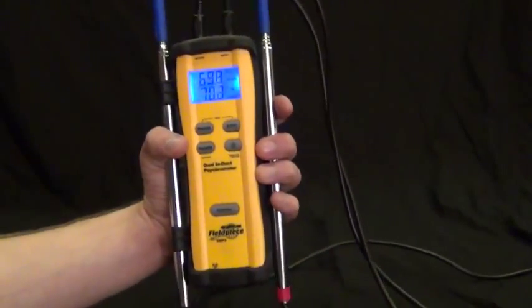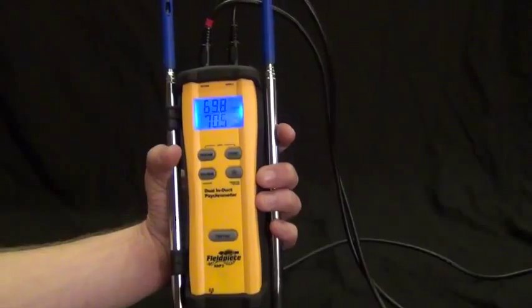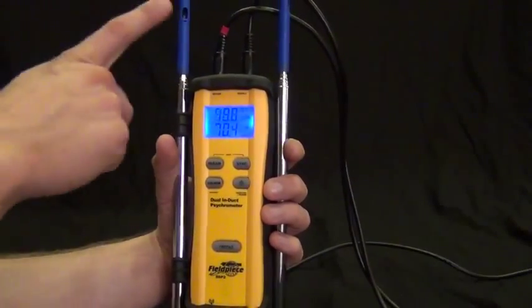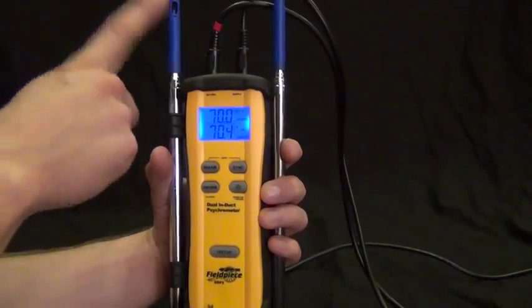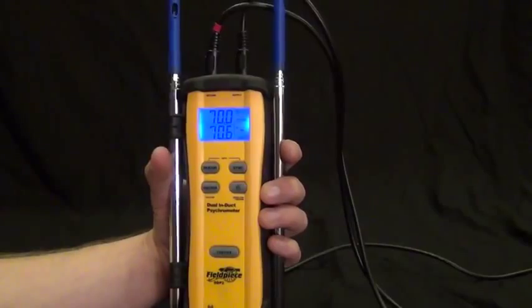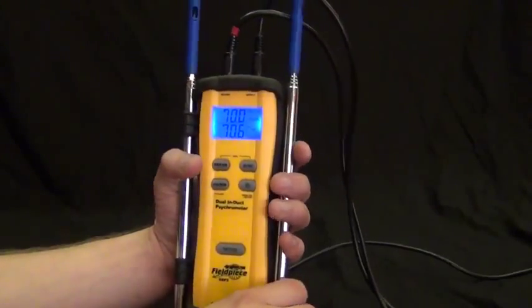And basically this is your Delta T tool on steroids. So what it measures is it measures a dry bulb and a relative humidity on each of the probes and then can perform a few calculations for you live.